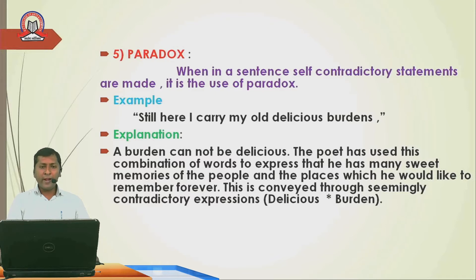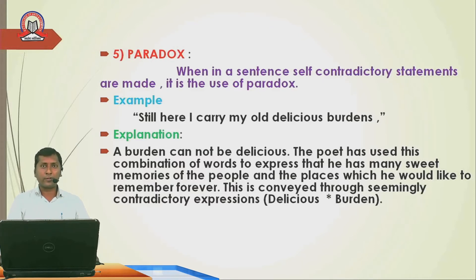The next poetic device is paradox. When self-contradictory statements are made in a sentence, it is the use of paradox. For example: 'Still here, I carry my old delicious burden.' The writer has used the contradictory words 'delicious' and 'burden' together. A burden cannot be delicious. The poet uses this combination to express that he carries many sweet memories of people and places which he would like to remember forever. This is a seemingly contradictory expression — 'delicious burden.'